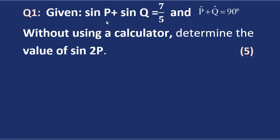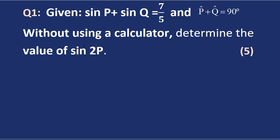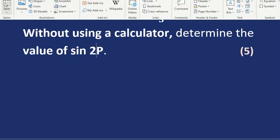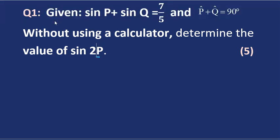In question 1, we're given that sine p plus sine q equals seven over five, and we're told that angles p and q are complementary, meaning they add up to 90 degrees. Without using a calculator, determine the value of sine 2p. Since we have to give our solution in terms of p, we want to write everything in terms of p — which means writing angle q in terms of p.